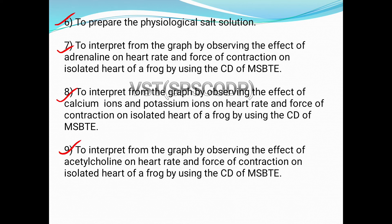The next experiment is to interpret from the graph by observing the effect of acetylcholine on heart rate and force of contraction on the isolated heart of a frog using the CD of MSBT. You have to observe the effect of acetylcholine on the frog heart via the CD of MSBT and study the effect by graph.